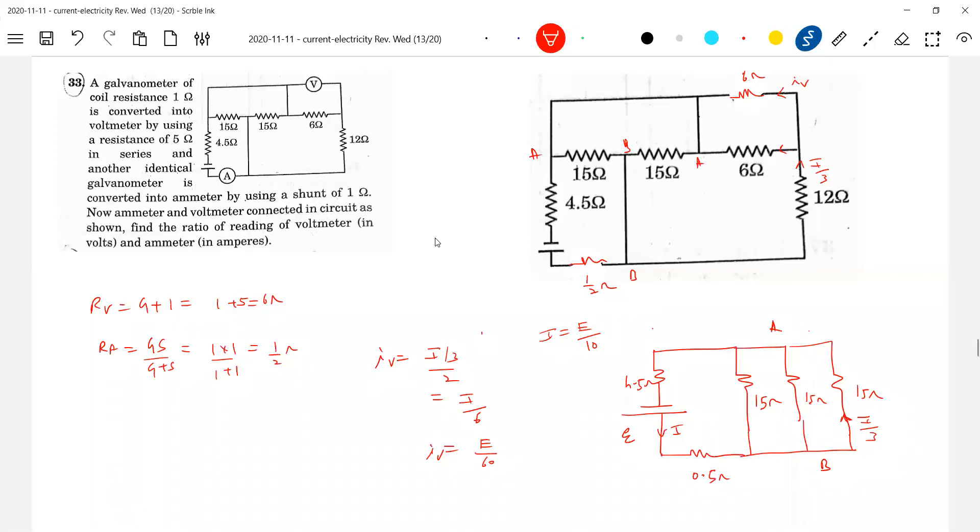Anybody answer? Okay, the ratio of that one. Again, the reading of voltmeter will be IV into 6 will be E by 10. He is asking reading of voltmeter V by I.